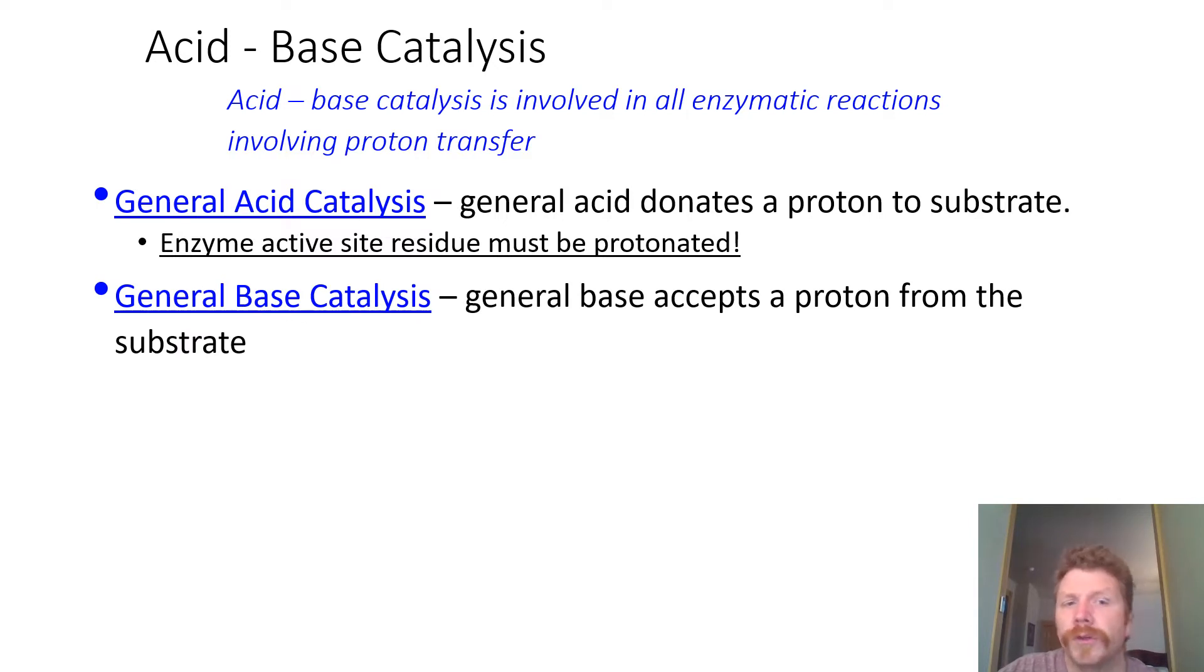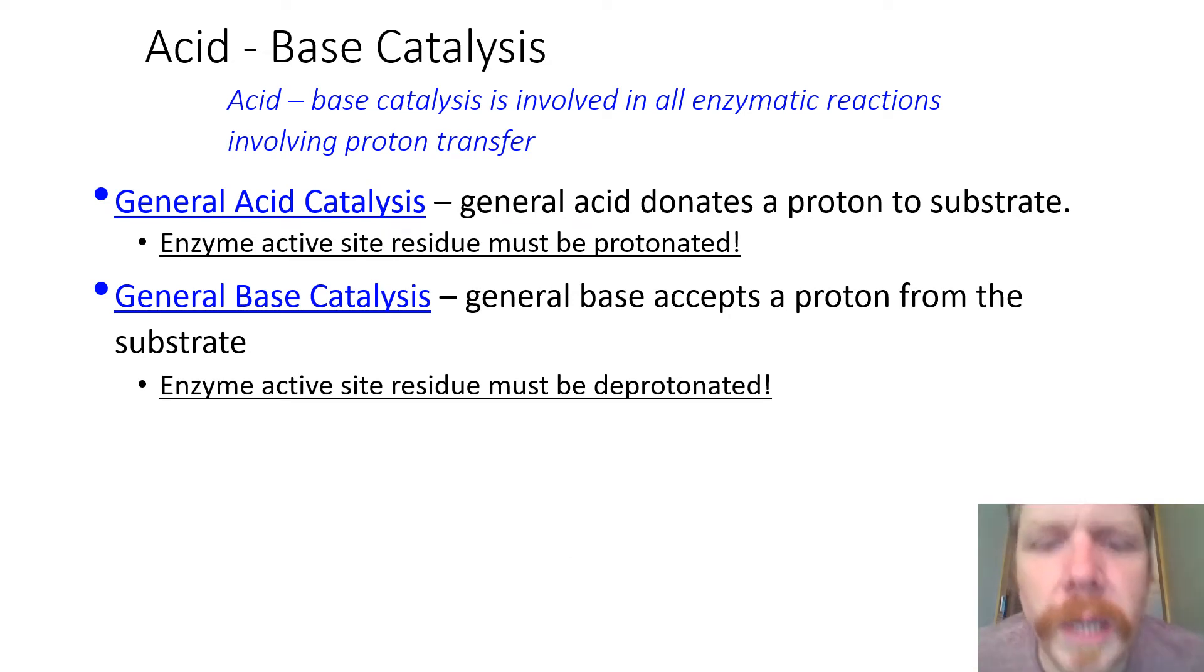So when we continue on from there, we have our definition for a general base. So general base catalysis is one in which a base accepts a proton from the substrate. So an enzyme active site must be deprotonated. So just as good general acids were arginine and lysine and maybe histidine, a good base would be something like aspartic or glutamic acid. Likewise, histidine could be good because it would be a deprotonated residue there.